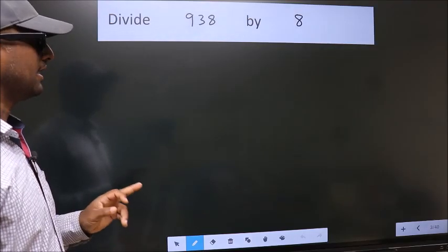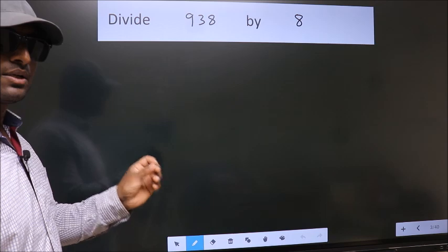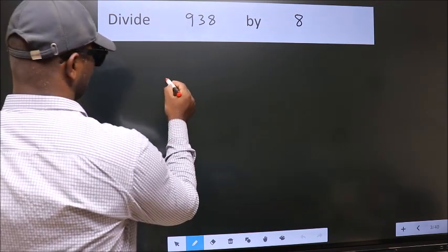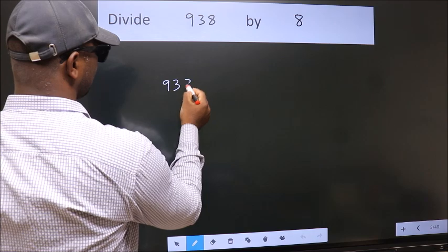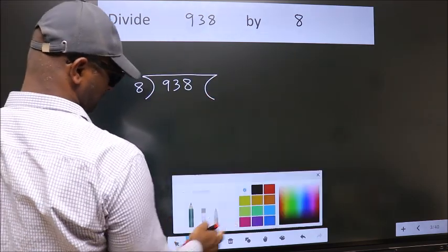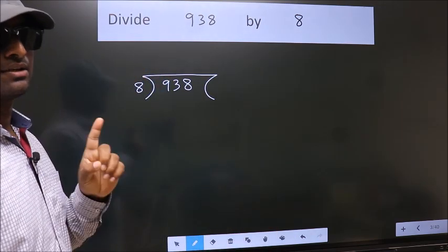Divide 938 by 8. To do this division, we should frame it in this way. 938 here. 8 here. This is your step 1.